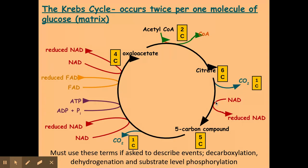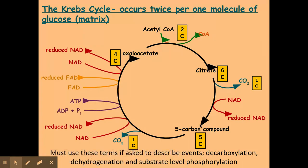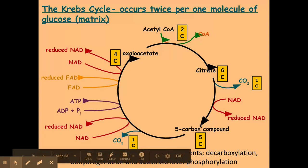My citrate is also having a hydrogen and an electron removed — therefore dehydrogenation has occurred to form reduced NAD. This produces a five carbon compound. You don't need to know what that one is called for our specification, which is good news.